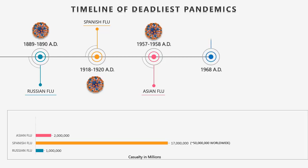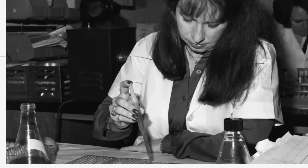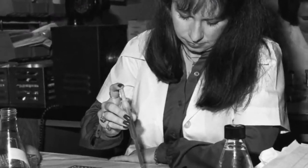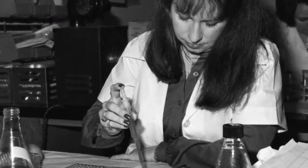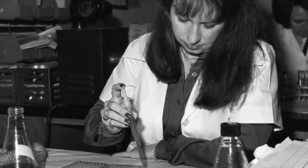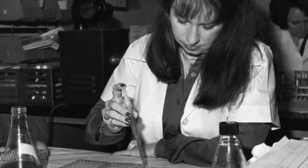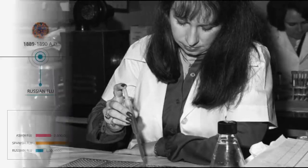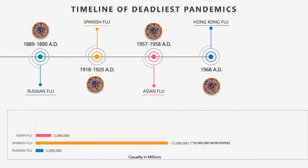At number 7: The Hong Kong Flu of 1968. The Hong Kong flu was a category 2 flu pandemic whose outbreak in 1968 and 1969 killed an estimated 1 million people worldwide. It was caused by an H3N2 strain of the influenza A virus, descended from H2N2 through antigenic shift — a genetic process in which genes from multiple subtypes reassorted to form a new virus.